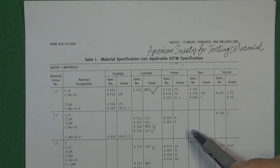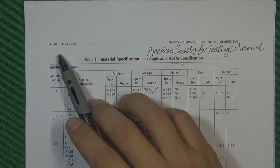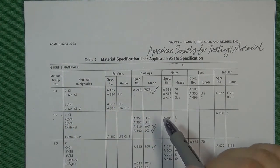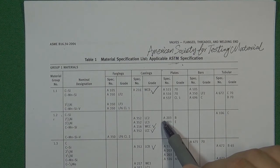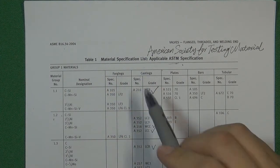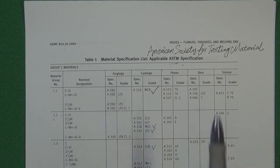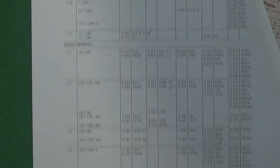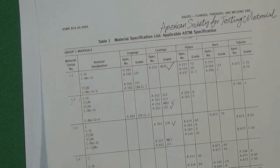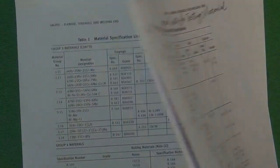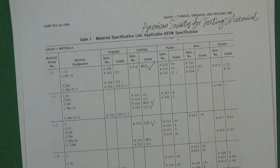In the last several videos we already talked about the ASME B16.34 standard. This standard contains a table called the material list table, which covers almost all the materials used in the valve industry when a valve is designed by ASME B16.34.